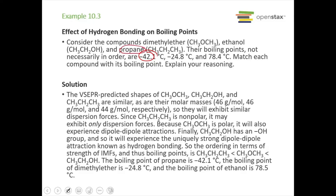Next, let's look at ethanol. We see it has an OH — that means hydrogen bonding. If it has a hydrogen bonded to an oxygen, it can have hydrogen bonding. So this molecule is going to have dispersion forces, dipole-dipole attractions, and hydrogen bonding. So ethanol should have our highest boiling point of 78.4 degrees Celsius.